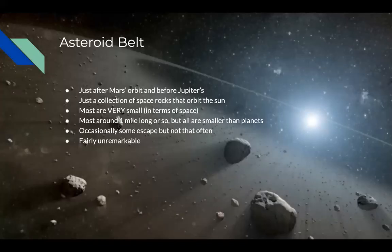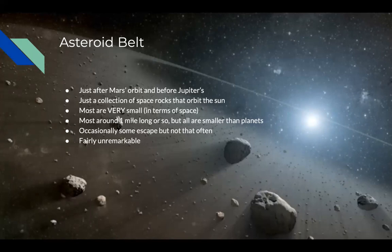Another part of the solar system is the asteroid belt. This is located in between Mars and Jupiter's orbit. To put it simply, it's just a collection of rocks in space that orbit the sun. In terms of the universe, they're very small — typically around a mile or so long, but all of them are smaller than the planets. That's why they're known as asteroids. Some escape the asteroid belt and go into other areas of the solar system, but that's a very rare occurrence.